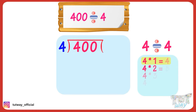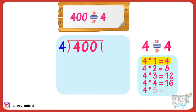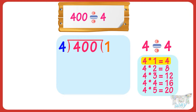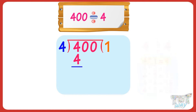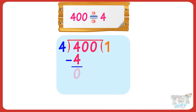4 multiplied by 1 equals 4. So, write 1 in the quotient and write 4 below the first digit of the dividend. Now, subtracting 4 from 4, we get 0. So, write 0 below 4.